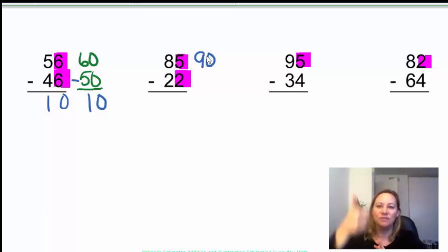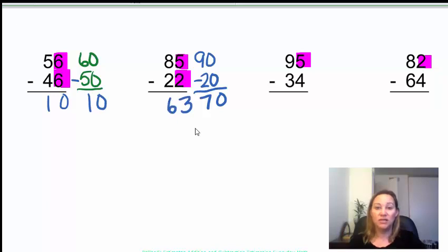So, 85. 5 goes to 90. 22. 2 stays to stay. Stay at 20. So, 90 minus 20 is 70. And let's see if it works. 5 minus 2 is 3. And 8 minus 2 is 6. Yep. 63 is close to 70. We're good. Let's move on.